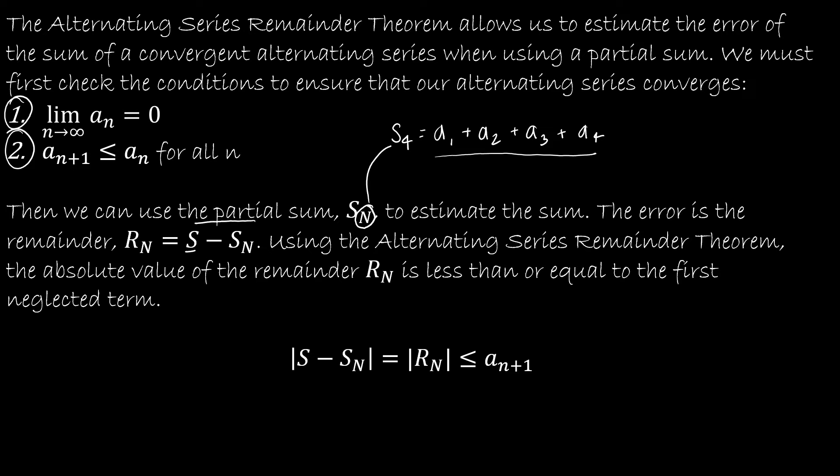So the remainder is what happens when I take the real sum and subtract my partial sum. Now the trick here is we don't know the real sum but what we're going to do is we're going to estimate it based on our partial sum. And so what the theorem tells us is that the absolute value of the remainder is less than or equal to the first neglected term. The absolute value of the remainder is less than or equal to the first neglected term.